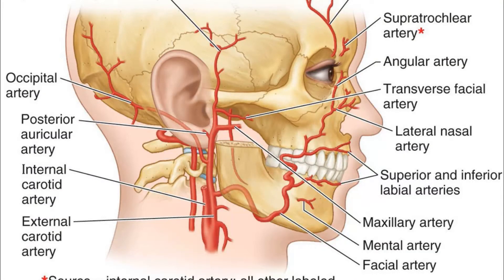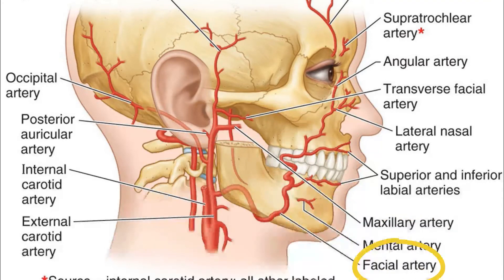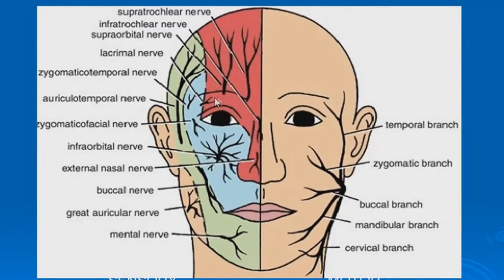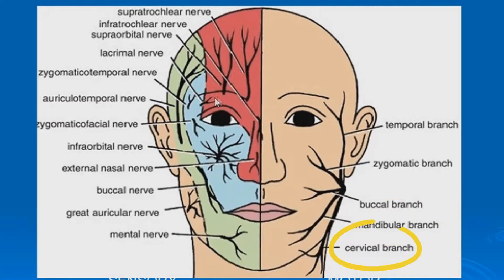About the vasculature, you've got the mental artery, which is a branch of the facial artery. The facial vein drains this area. For the innervation, you have the mandibular branch of the facial nerve, the trigeminal nerve V3, a cervical branch of the facial nerve, and then the mental nerve.